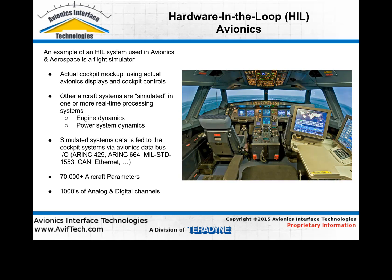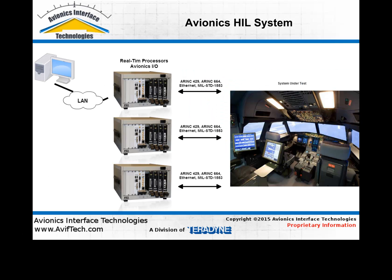We would want to simulate those systems with a real-time processor running math models. In the case of an aircraft, it may be several real-time processors, because it's typical for there to be 70,000 to 100,000 different parameters that the embedded control systems of the aircraft have to interact with. When we talk about the digital I/O lines and the analog and discrete lines used to communicate data between sensors, actuators, and the embedded control systems, we're talking on the order of thousands of channels — hundreds of ARINC 429 channels, ARINC 664 Ethernet channels, CAN bus, and MIL-STD-1553.